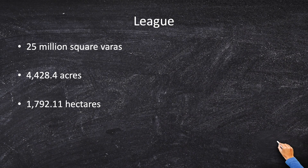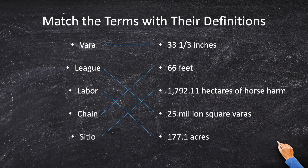Next, a league. A league is a unit of area equal to 25 million square varas. If you convert from square varas to acres, it's about 4,428 acres. A lesser known conversion is that a league is also 1,792 hectares. Spanish, Mexican, and Texas land grants would grant a league of land — or a league and a labor — to their settlers. Memorize that. So let's connect up a league with 1,792 hectares or 25 million square varas.